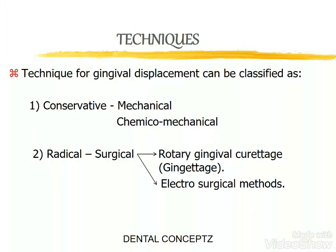The techniques of gingival retraction can be classified as conservative techniques, which include mechanical and chemico-mechanical methods, and radical or surgical procedures, which include rotary gingival curettage and electrosurgical methods.